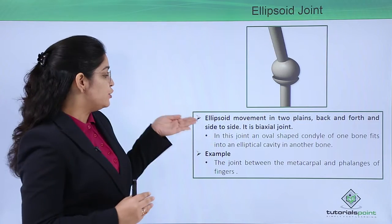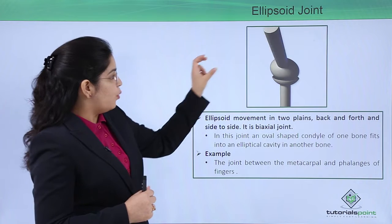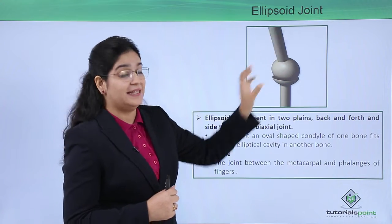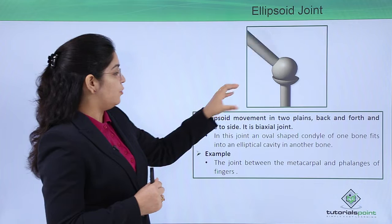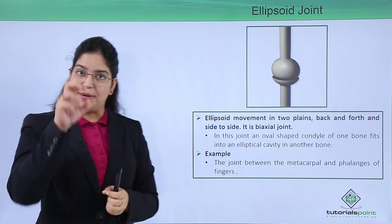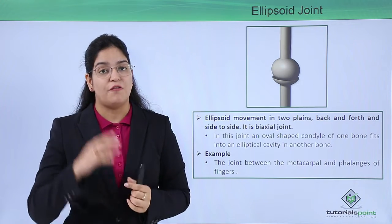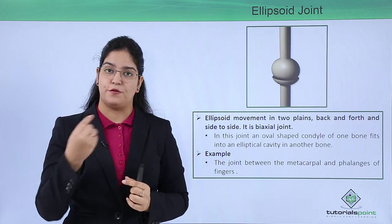and forth, and side to side. One is elliptical, the other is condyle-shaped. Because of this movement, the particular muscle or particular part of our body can move to and fro and from